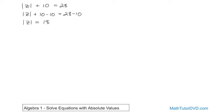Now, a lot of students don't know what to do when you hit this point. This is not saying that z is equal to 18. If the absolute value bars were not here, then you've finished the problem. But what it's saying is that the absolute value of z is 18.